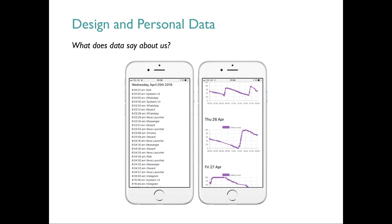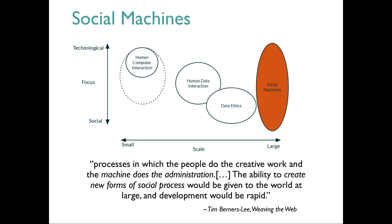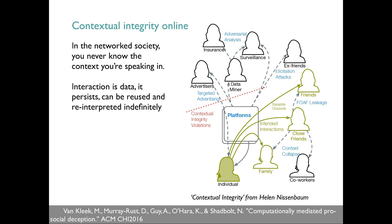The first research area has built over a few years around design and personal data. It's grounded in social machines, which comes out of Tim Berners-Lee's early work on what the web is and should be — his idea that the web was supposed to create new forms of social process and help the social development of the whole world. One side effect of interactions going online is that all of our interactions are data, which means they can be reused and reinterpreted indefinitely.